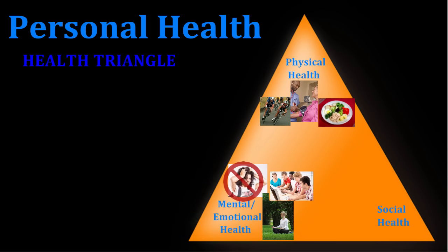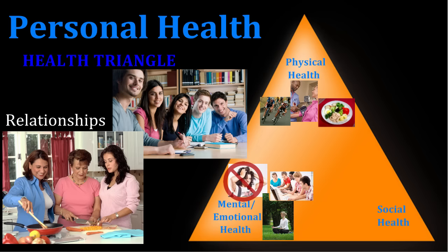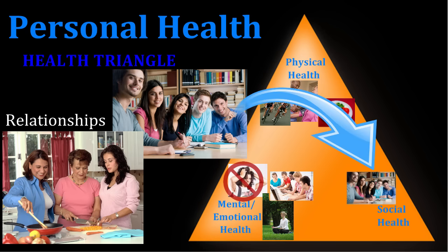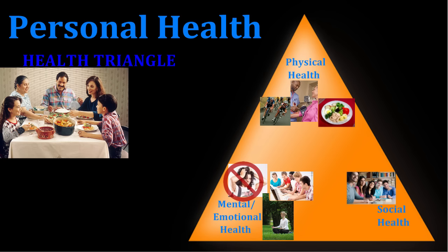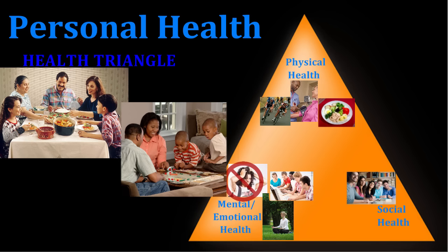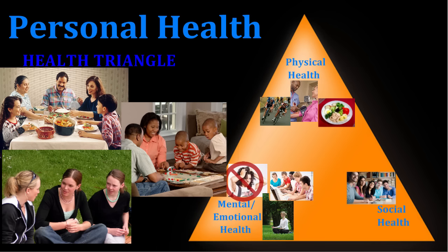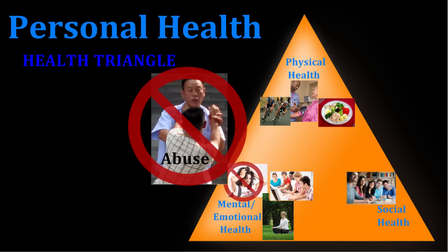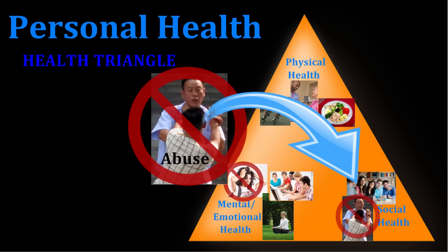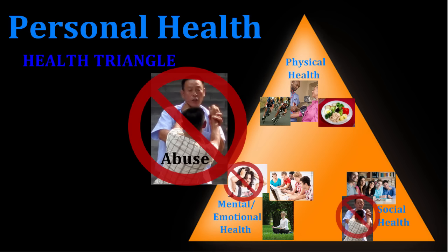The final category of the health triangle is social health, which focuses on your relationships with other people. Spending quality time with family and friends is an important aspect of social health. Sharing a meal, participating in a fun activity, or simply holding a conversation together are ways of fostering relationships with others. Avoiding abusive relationships is also a vital component of social health.